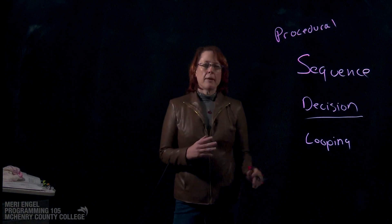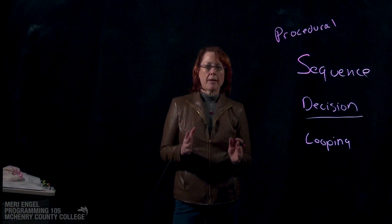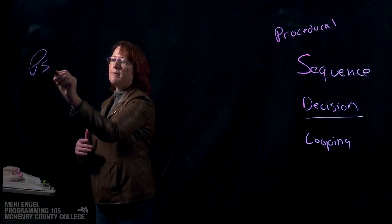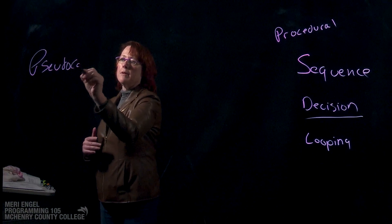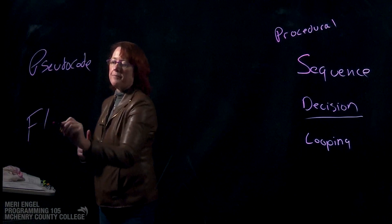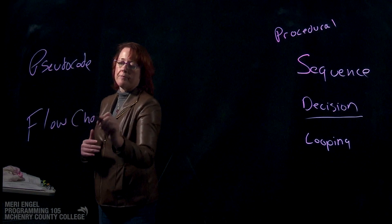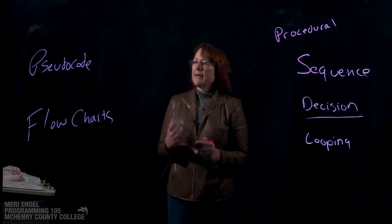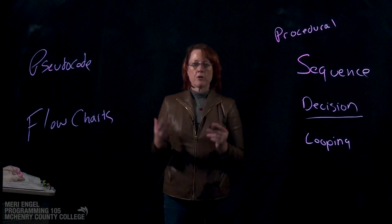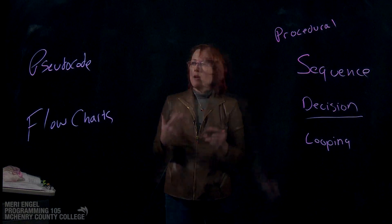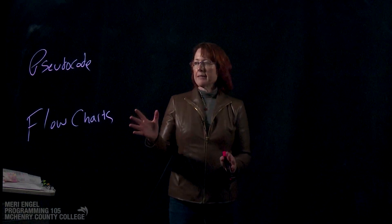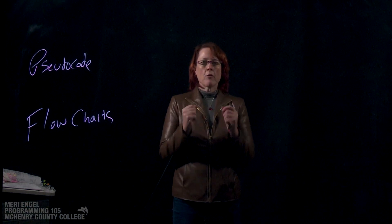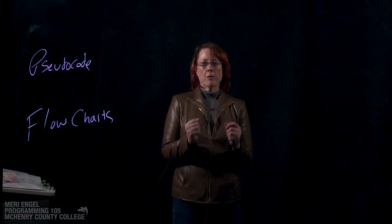When we're planning a program, there are two common ways of planning procedural programming: pseudocode and flowcharts. I like both, though I generally prefer pseudocode. This is stuff you're generally doing for yourself — it's to help you plan.